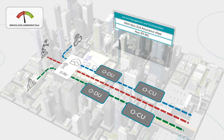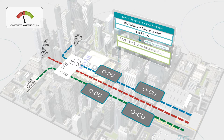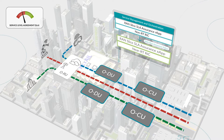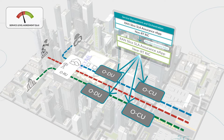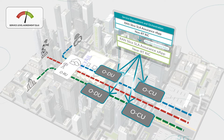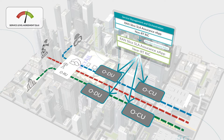If it detects an SLA violation, it immediately initiates corrective actions and adjusts the performance targets of the Slice Assurance X app via policy. The X app uses this performance target guidance to continuously update the resource allocation levels on the appropriate CUs and DUs in real-time to conform with the specified SLA levels.